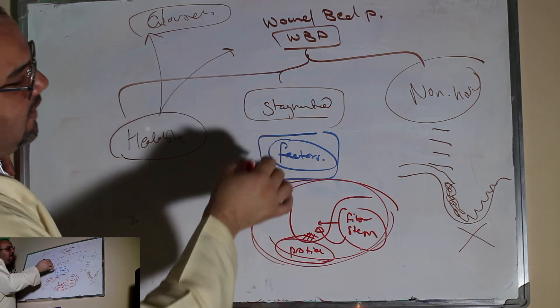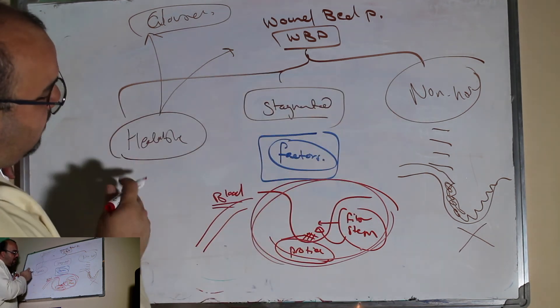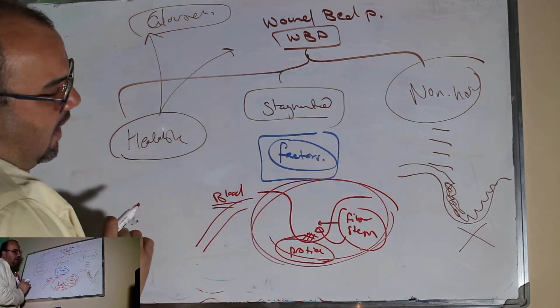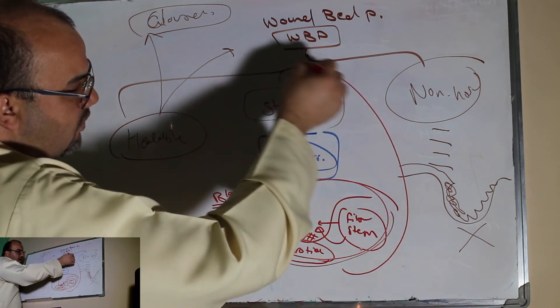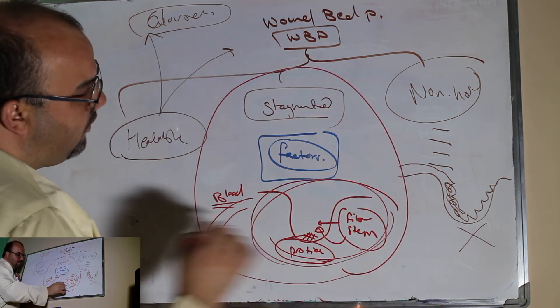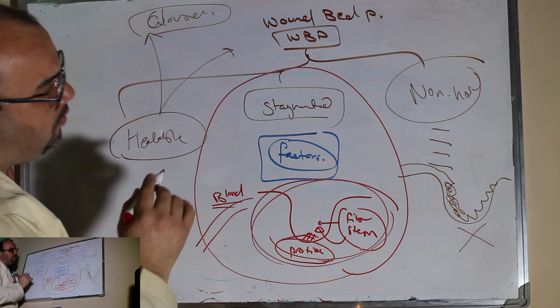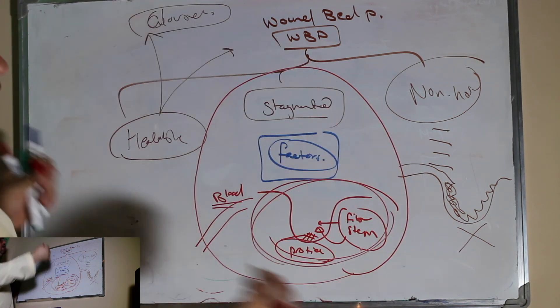So stagnated wounds, or wounds in the middle between healable and non-healable, are a type of wounds that need factors from outside the system of the wounds that will support the healing of the wounds.